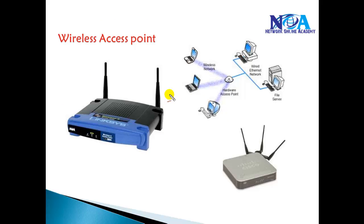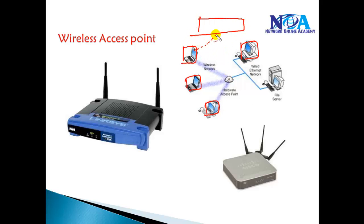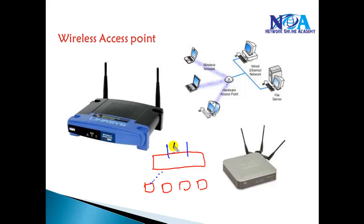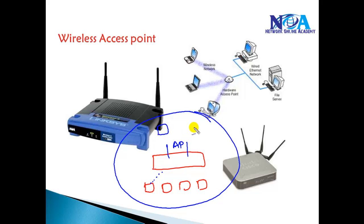Another device found in company networks is the access point. With an access point, you can connect computers, laptops, desktops, or mobile phones to a centralized device without a wire — wirelessly. The access point does the same job as a switch, connecting computers in the LAN, but without requiring a physical wire. It has wireless antennas and radiates signals within an area so that any device within the coverage area can connect without a wire.